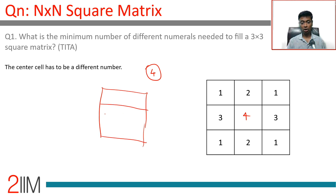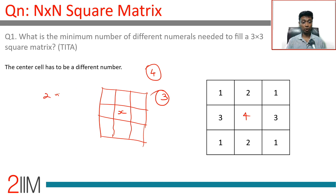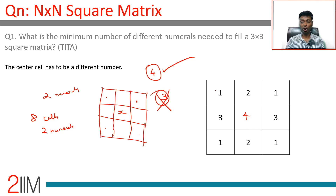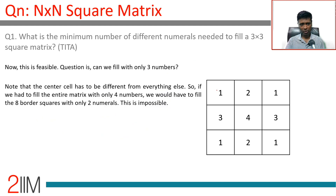Whenever we get an answer like this, it's worth checking if we can do it in fewer. If we tried just three numerals, the middle cell is one numeral, leaving two numerals for the other eight cells — four cells each. That arrangement is impossible given the adjacency constraints, so three does not work. Four is confirmed as the minimum.